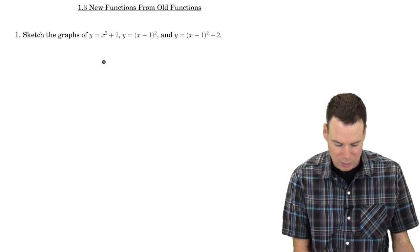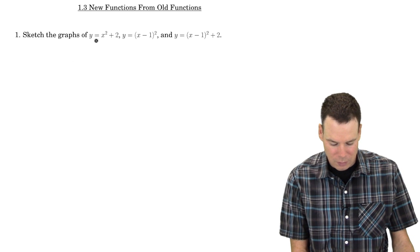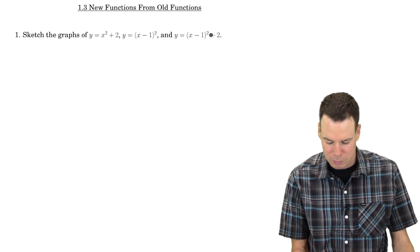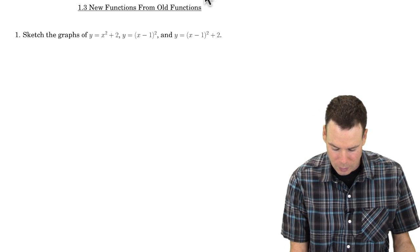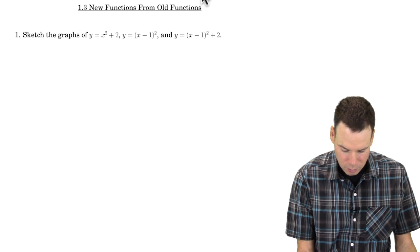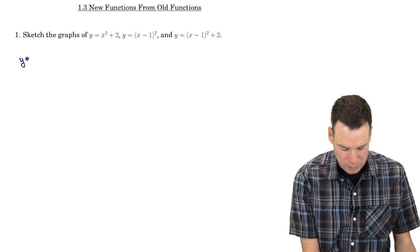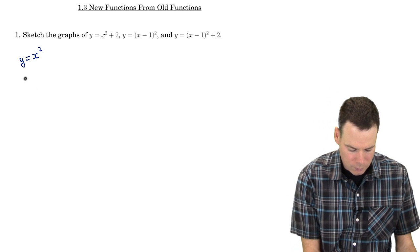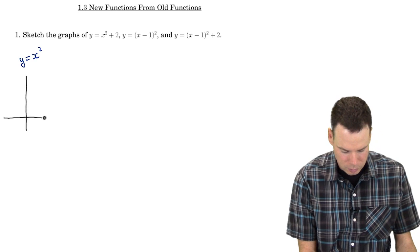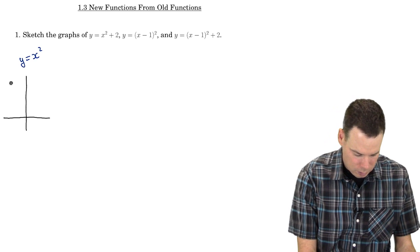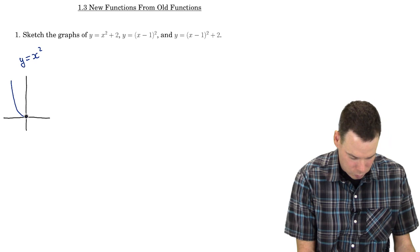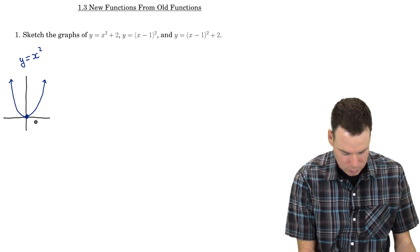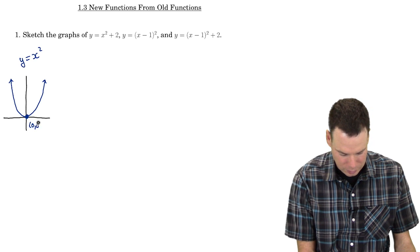So let's get started with this first example: sketch the graphs of these three functions — y equals x squared plus 2, y equals x minus 1 squared, and y equals x minus 1 squared plus 2. These should be pretty familiar. They're all coming from the power function y equals x squared. If we start with the graph of that one first, it's our good old friend the parabola, whose vertex is at the origin — vertex at (0, 0).